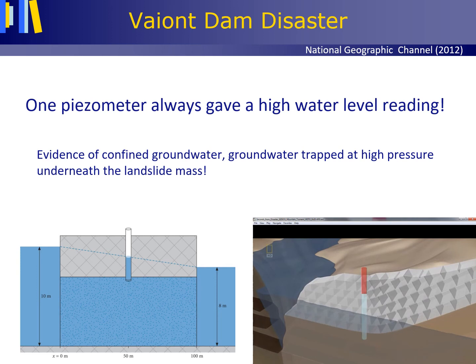The Vaillant-Damm disaster video. There was a thin but continuous clay layer present which they had not observed during geological mapping, but one piezometer always gave a high water level reading. They should have recognized this as evidence of confined groundwater, groundwater trapped at high pressure underneath the landslide mass. This shows how important it is for geologists to be well trained in hydrology, or to at least have someone in the team who is.